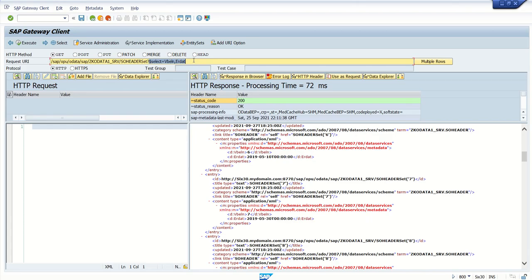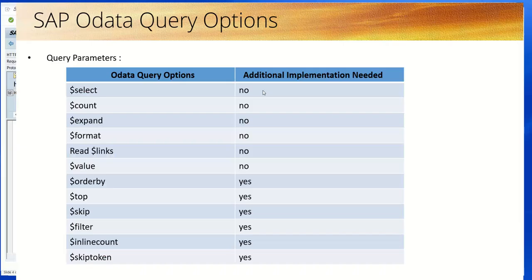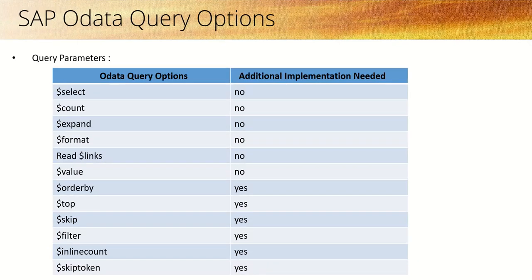So parameters like $count, $format, $expand, and $select are query parameters which we can use without any code implementation. The remaining parameters like $filter and $skip require some kind of code implementation, which we'll see in the next session. This is about OData query options.